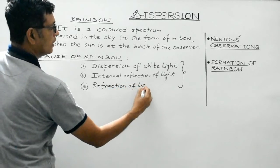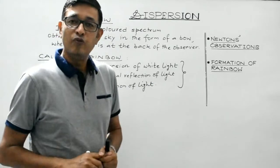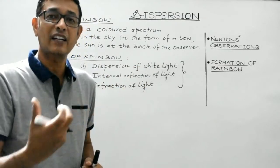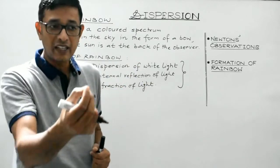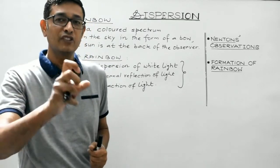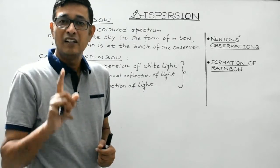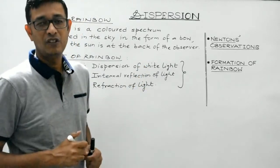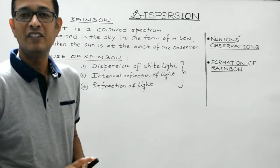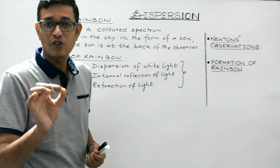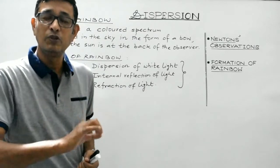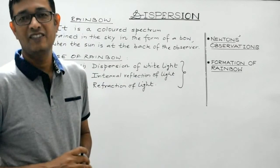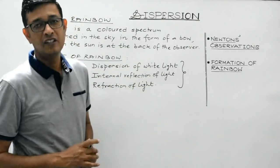When light travels from air into water droplets, due to the change in medium the light gets refracted. And once light enters the water droplet, when it comes out from the water droplet back to air, it again suffers refraction. So the rainbow is formed due to these three phenomena: dispersion of sunlight, total internal reflection, and refraction from the water droplets suspended in air. All three phenomena are involved in the formation of rainbow.